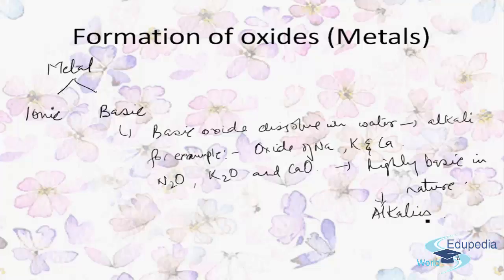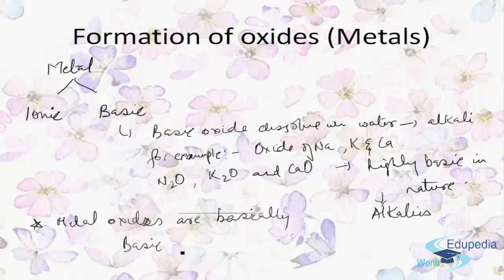Oxides of metals like zinc and aluminum are moderately basic, so they react with both acids and alkalis to form salts. These kinds of oxides we call amphoteric oxides. We conclude that metal oxides are basically basic in nature and metals form basic oxides.